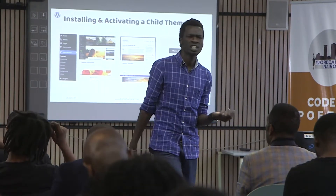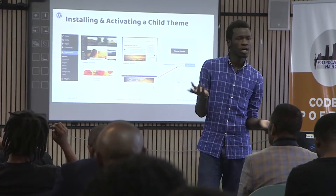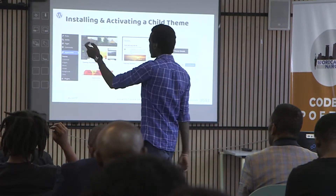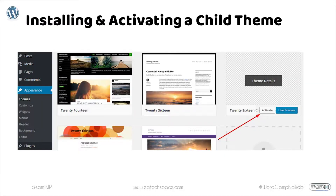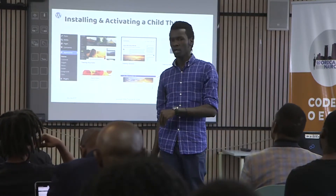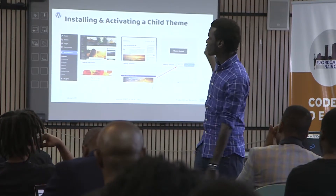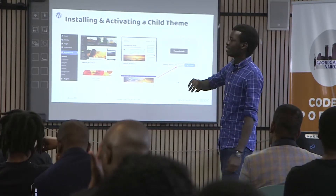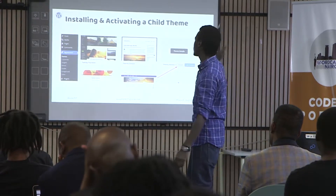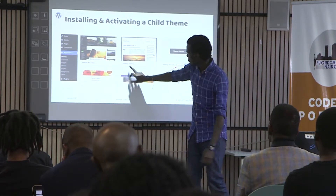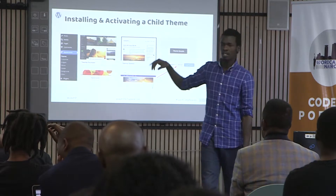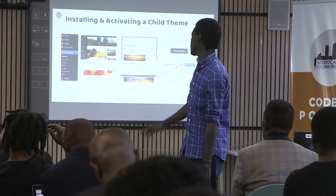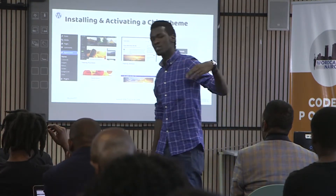Once you've created your child theme, you need to activate it. Go to Appearance > Themes. If you created the theme manually on your desktop, you'll need to upload it to your WordPress installation. But if you used a plugin, you'll find it automatically created there. You'll see the parent theme and the child theme listed. Just activate the child theme. If you want to preview it first, click Live Preview to see how it will look before activating.